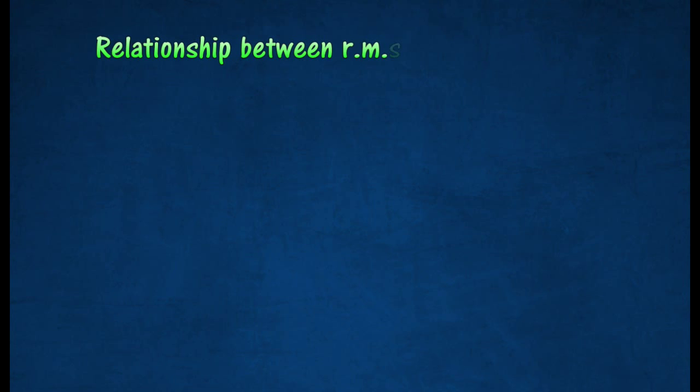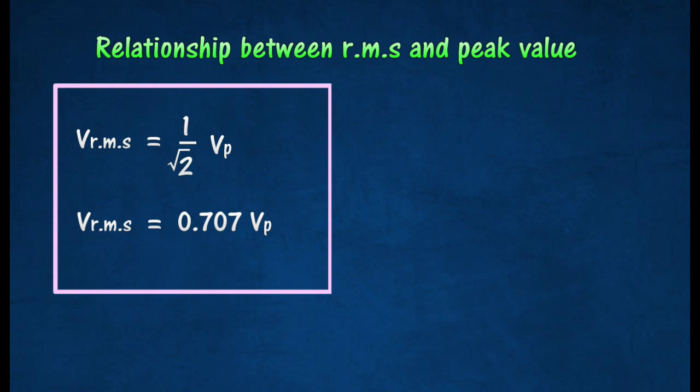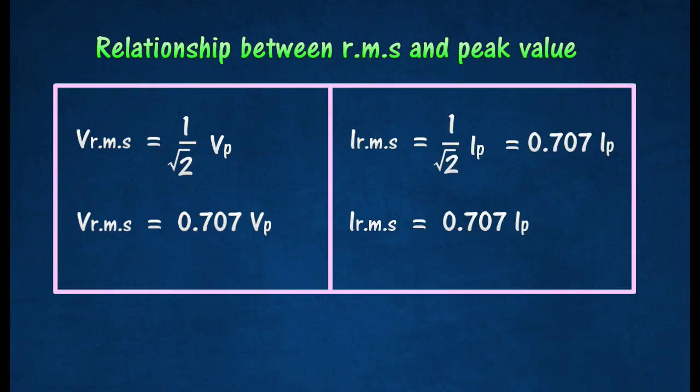The following equation shows the relationship between the root mean square value and its peak value.